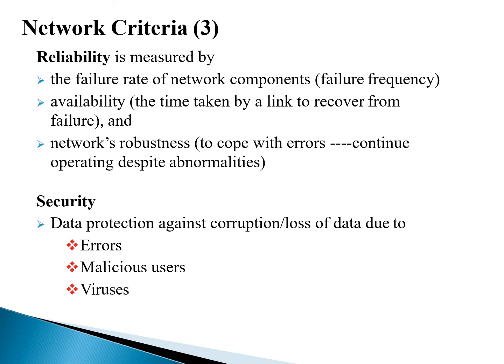The next topic is network robustness and security. Robustness refers to how we cope with errors and how we continue operating despite abnormalities. Security is a major issue in today's sensitive world. Protection of data is very important — corruption or loss of data due to errors, malicious users, and viruses are familiar threats. To secure data, we can use passwords and usernames, allocating credentials to users to secure access to the network.